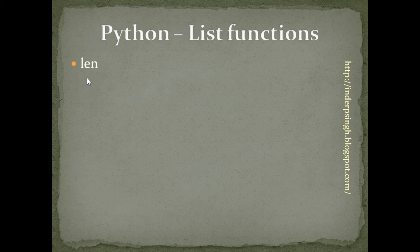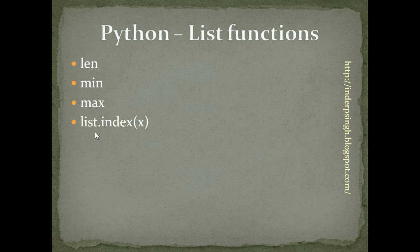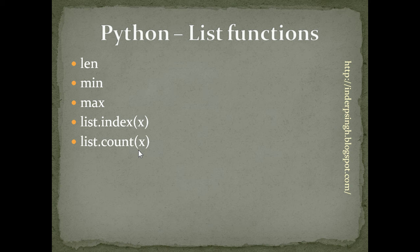First, we have the len function — it returns the number of items in the list. The min function returns the smallest item in the list. The max function returns the largest item in the list. list.index returns the index of the item in the list whose value is x.